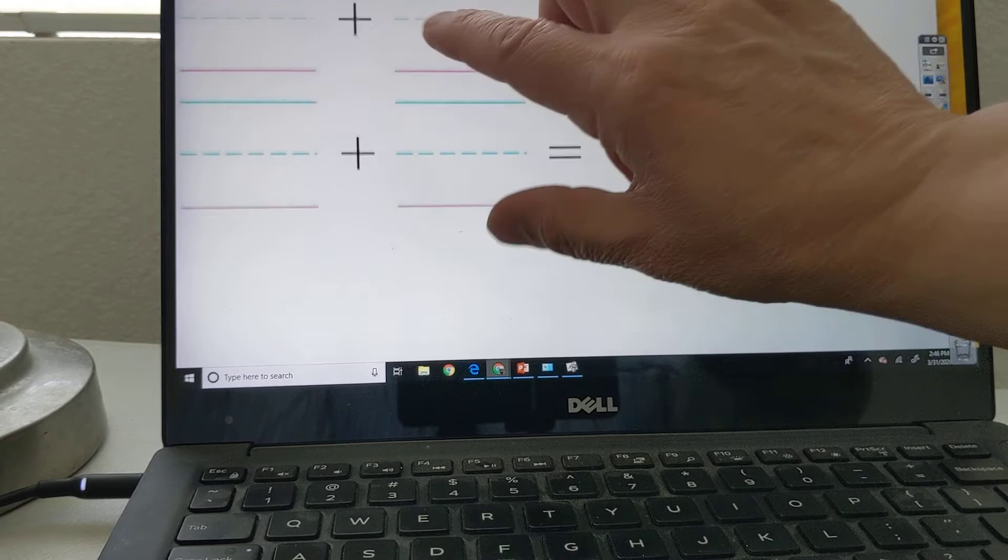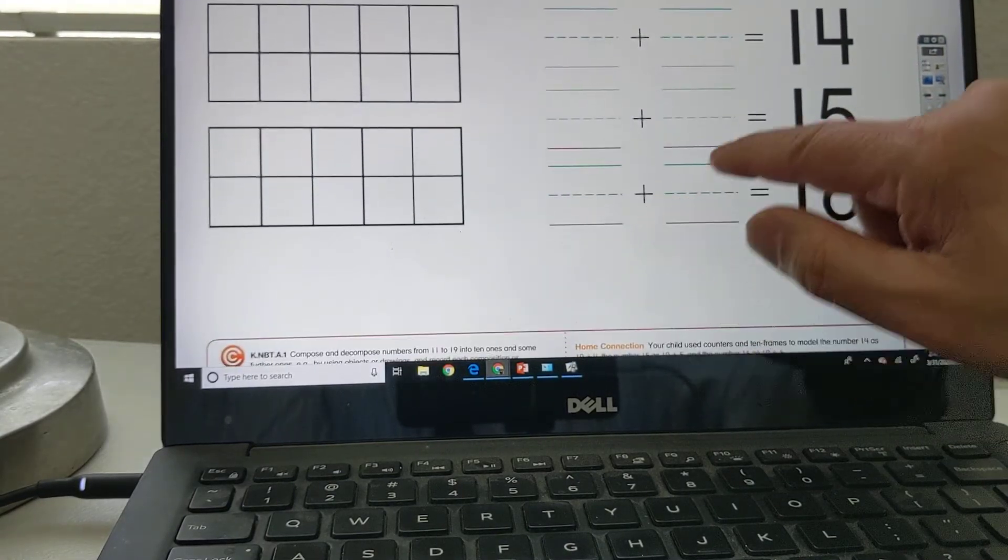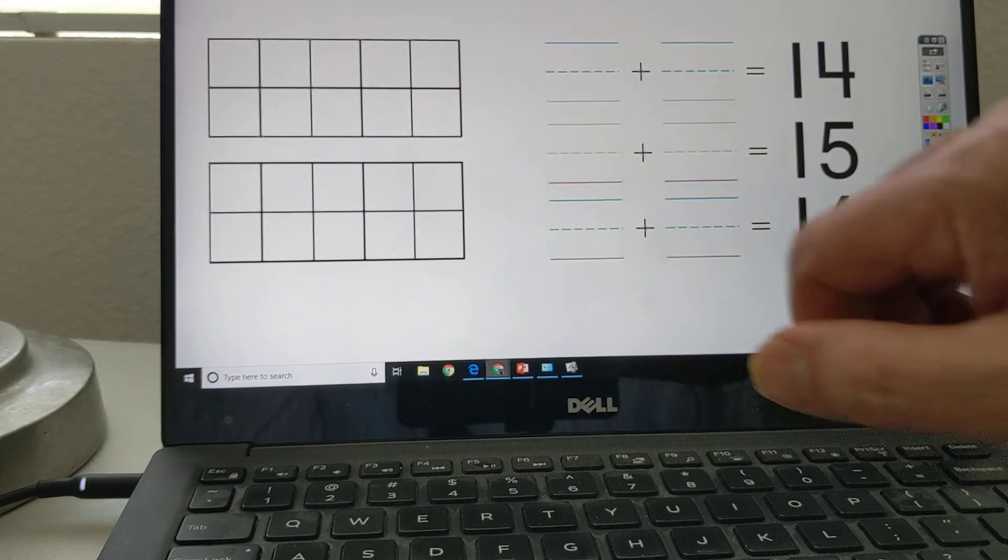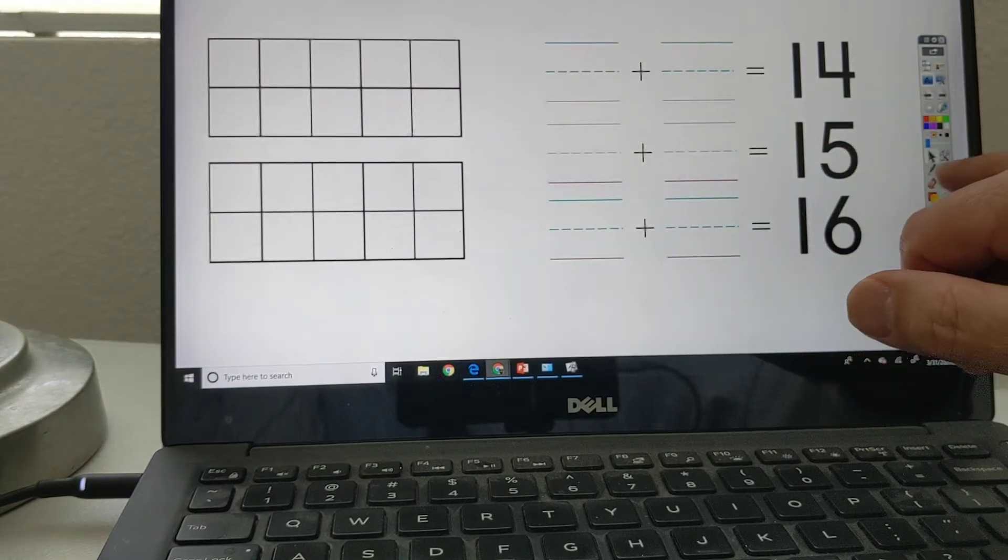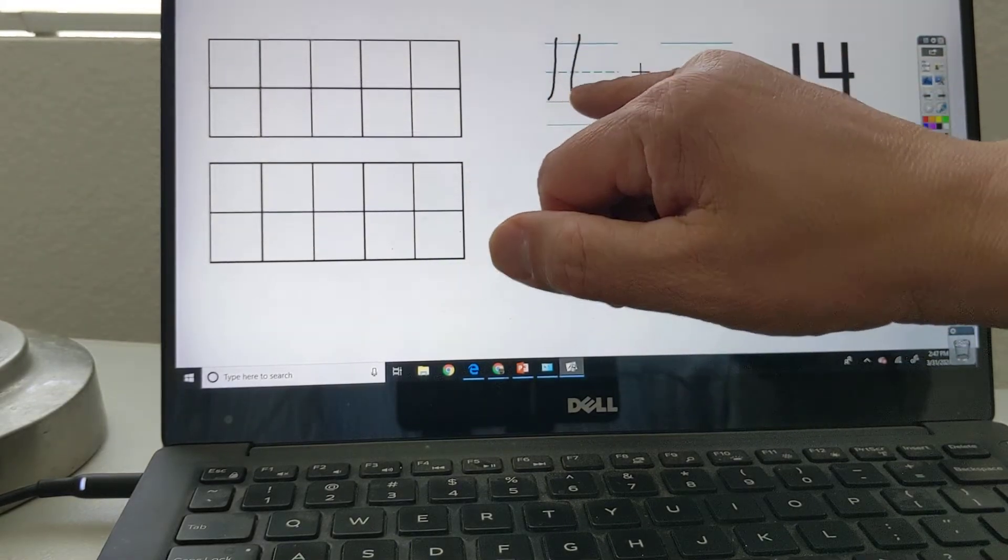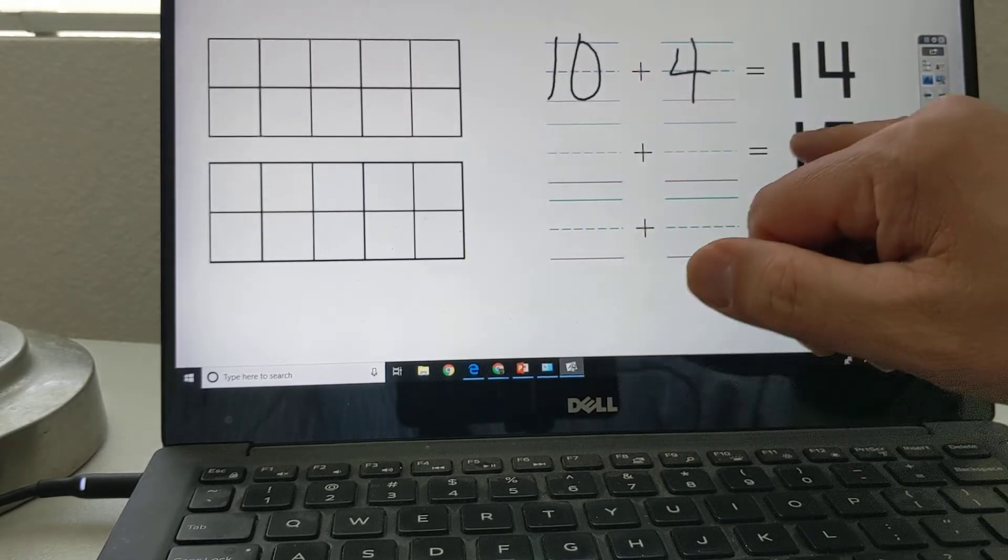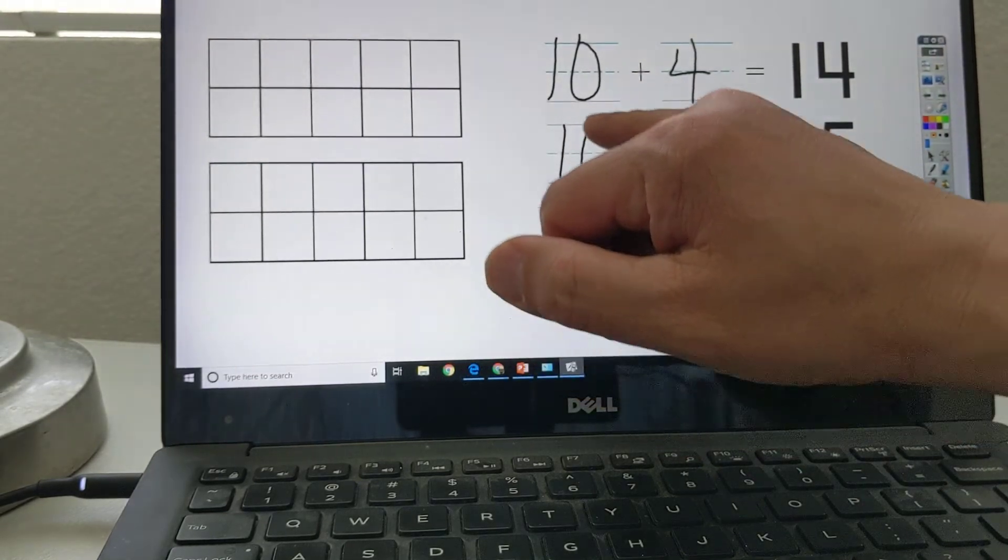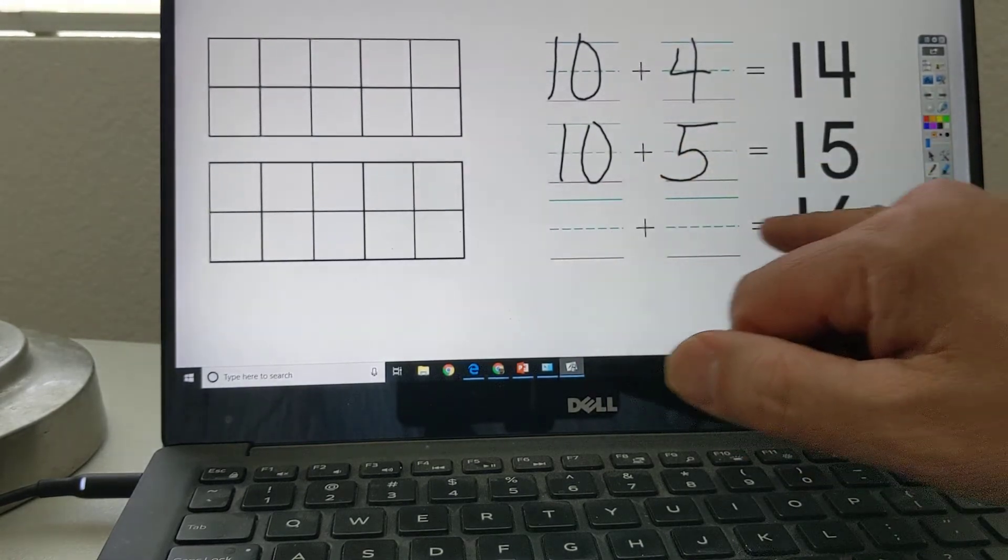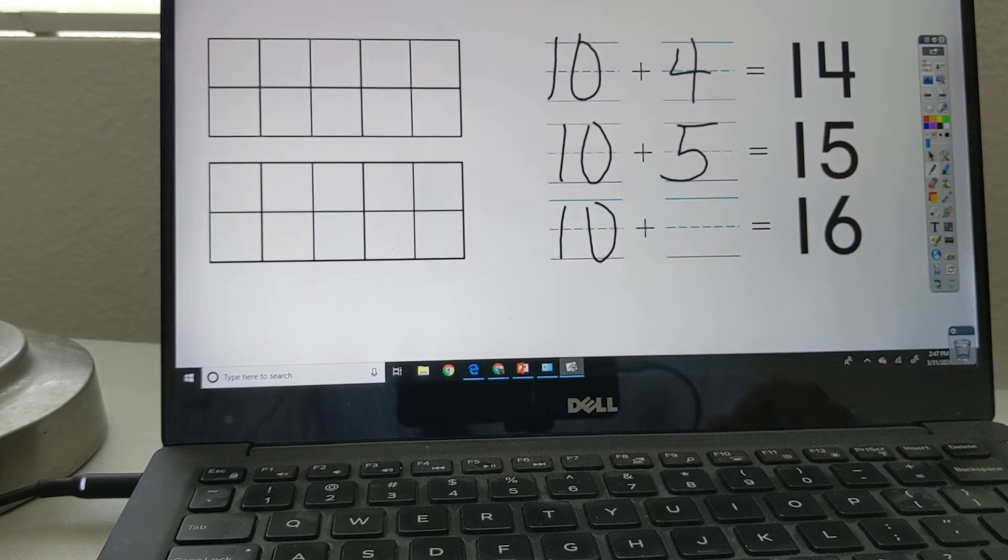All right. Let's go to here and see what it's saying. 14, 15, 16. So here, 14 is 10 plus how many? 4. You're right. 15 is 10 plus what? You got it. 5. 16 is 10 plus what? You should figure it out.